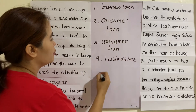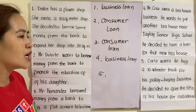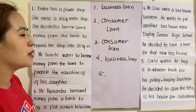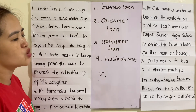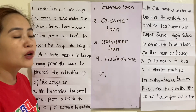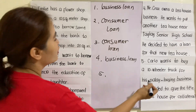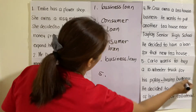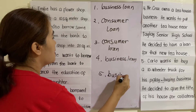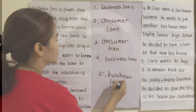Number five: Carlo wants to buy a 10-wheeler truck for his palay buying business. He decided to give the title of his house as collateral. Obviously, this is for business purposes, therefore this is a business loan.